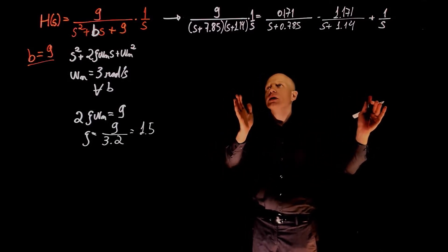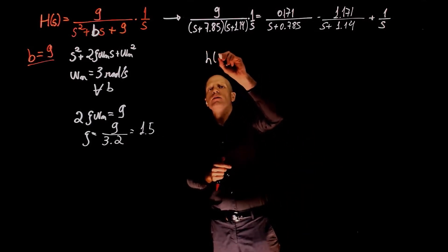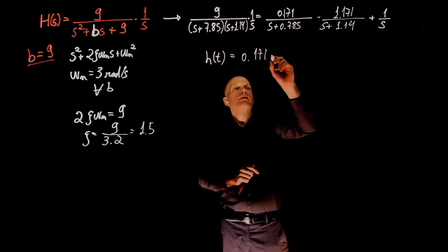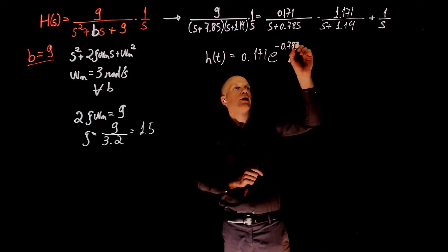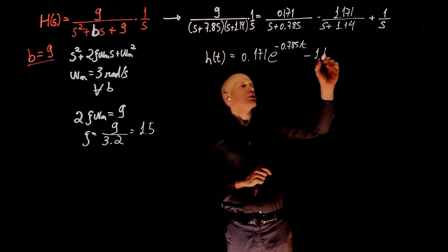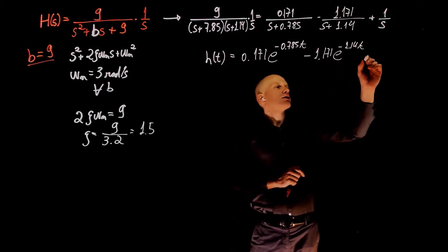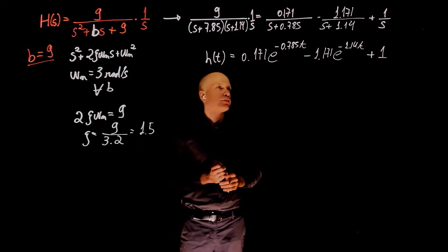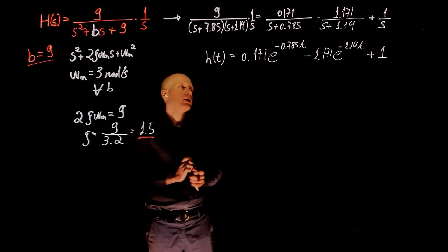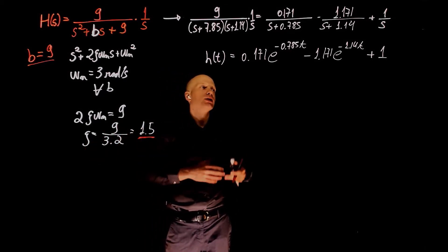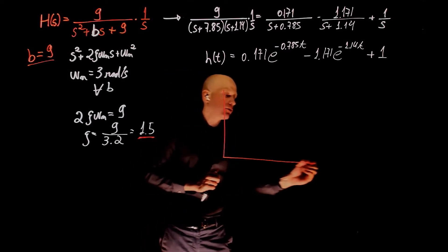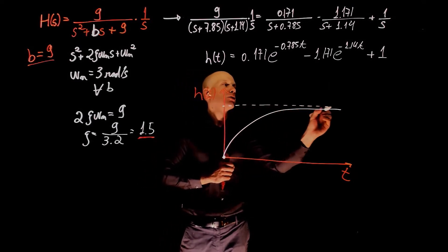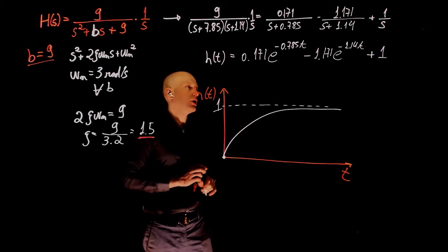Having the expression in partial fraction format makes it easy to find the inverse Laplace. H of s becomes h of t in the temporal domain. The first term becomes a constant times exponential of negative 7.85t, minus 1.71 exponential of negative 1.14t, and the last term is simply 1. We see that the time response only has exponential components, given that the damping ratio is greater than 1 and all poles are distinct real numbers. The function starts from 0, follows an exponential curve, and eventually reaches 1.